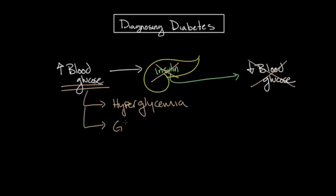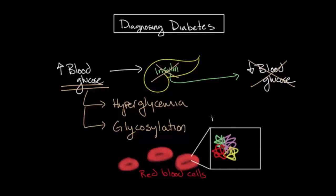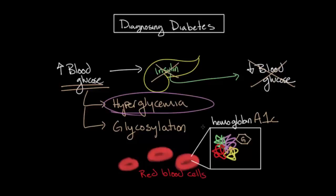A side effect of hyperglycemia is a process known as glycosylation, which is the non-enzymatic attachment of glucose to proteins. One protein of importance in diabetes mellitus is hemoglobin, located within red blood cells. In the presence of hyperglycemia, glucose will attach itself to an abnormally high percentage of hemoglobin within the red blood cells. This is known as glycosylated hemoglobin, or hemoglobin A1C. It is the hyperglycemia and hemoglobin A1C that are tested for in the blood to aid in the diagnosis of diabetes mellitus.